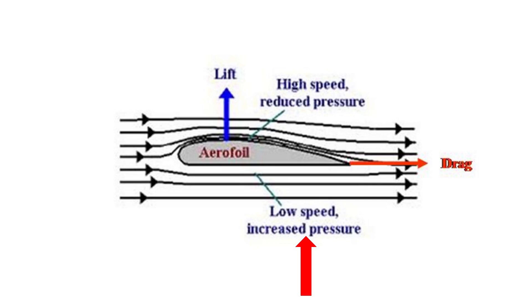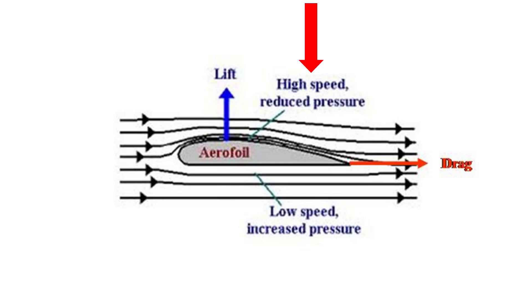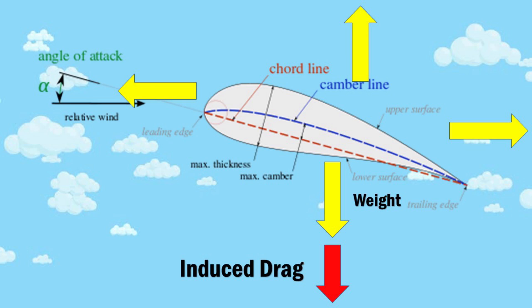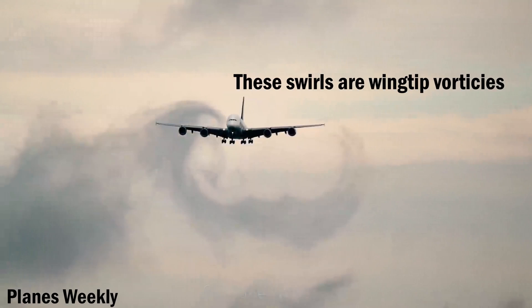One of the main reasons that high aspect ratio wings have lower drag is due to their reduction of induced drag. Essentially, induced drag occurs when high-pressure air on the bottom of the wing slips over the side of the wing onto the top of the wing, where there's a low-pressure region, pushing down on the wing and requiring the aircraft to produce even more lift.